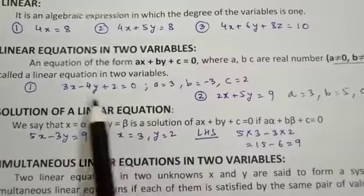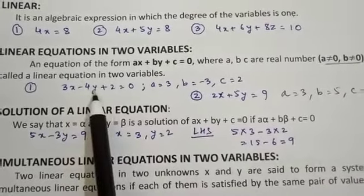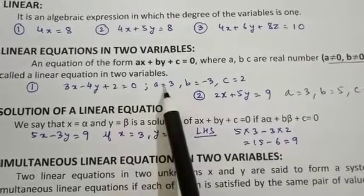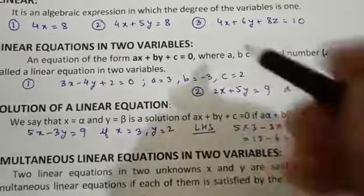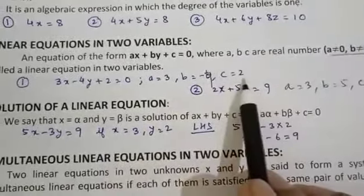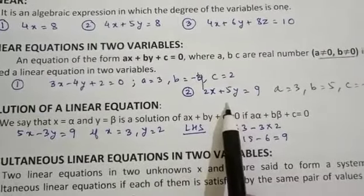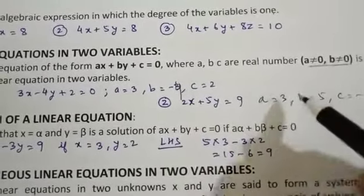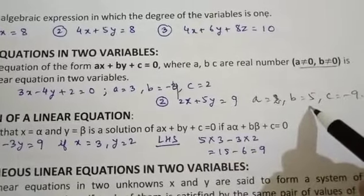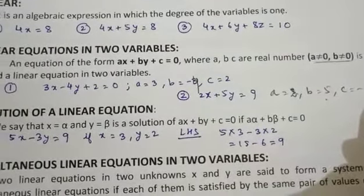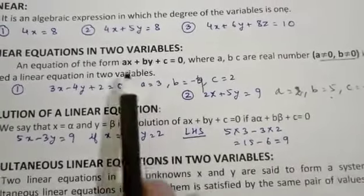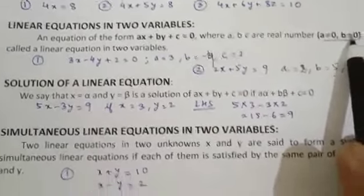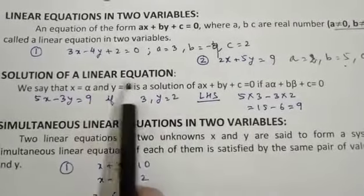If you look at example number one: 3x minus 4y plus 2 equal to 0. In this linear equation in two variables, a is 3, b is minus 4, and c is 2. In the second equation, 2x plus 5y equal to 9, a is 2, b is 5, and c is minus 9. So for a linear equation in two variables, it should be in this format where a and b should not be equal to 0.